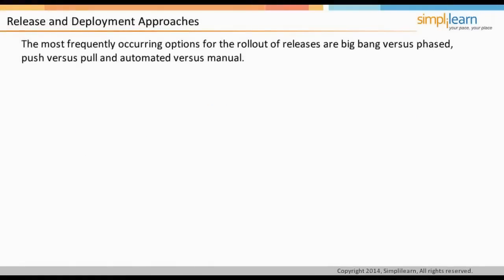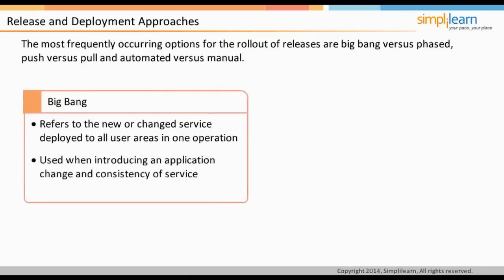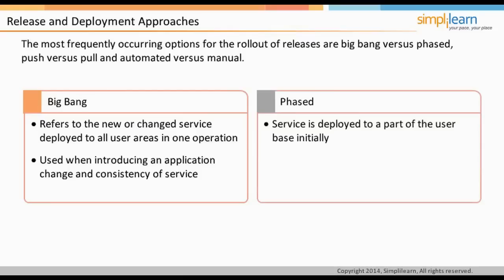Different considerations apply with respect to how a release is deployed. The most frequently occurring options are: Big Bang vs. Phased, Push vs. Pull, and Automated vs. Manual. The Big Bang approach deploys a new or changed service to all user areas in one operation, often used when consistency across the organization is important — for example, installing office software for 500 users at once. The negative aspect is that it increases the risk and impact of a failed release. The phased approach deploys the service to a part of the user base initially and repeats for subsequent parts via a scheduled rollout plan, used for example in retail organizations introducing new services in manageable phases.